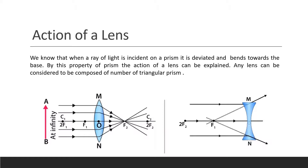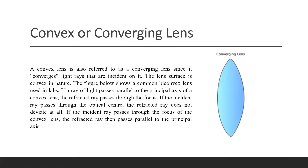A convex lens is thicker in the middle and thinner at the edges. In a convex lens, light rays from a point object refract in such a way that all the rays converge at a single point. Since the convex lens converges all light rays at a single point, we also call it a converging lens. In a convex lens, rays of light traveling parallel to its principal axis converge toward it.